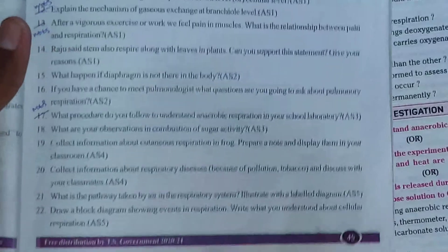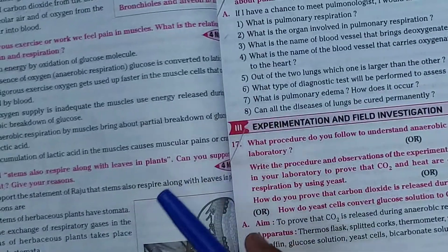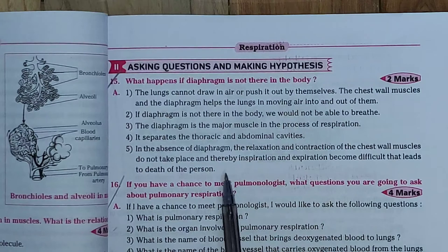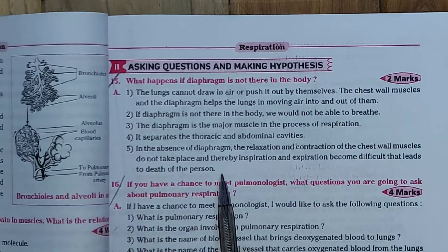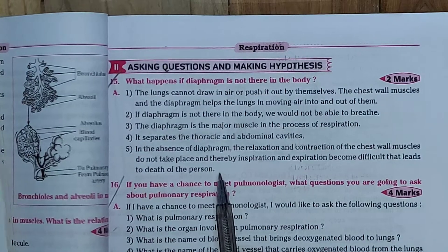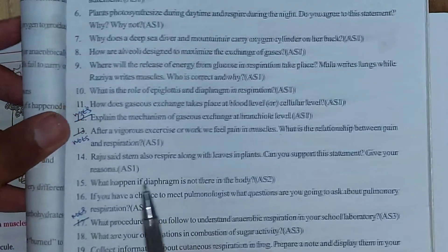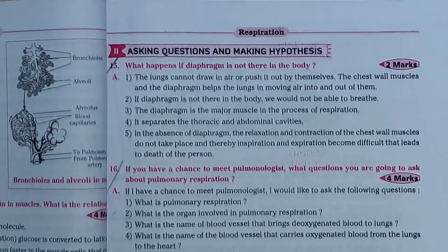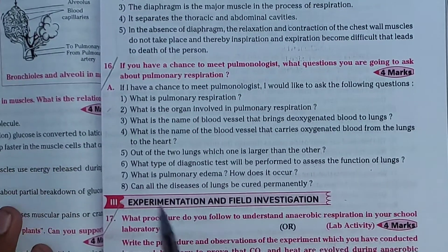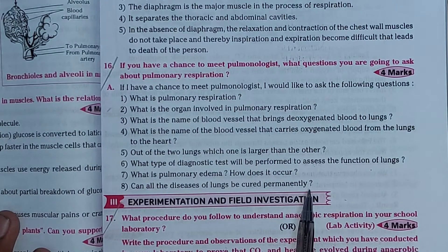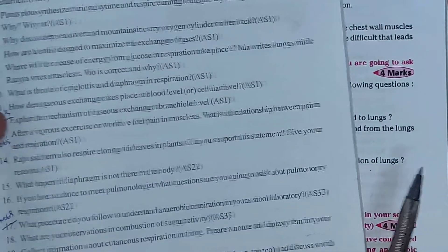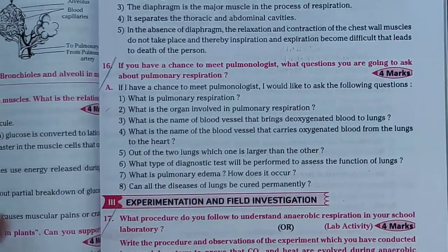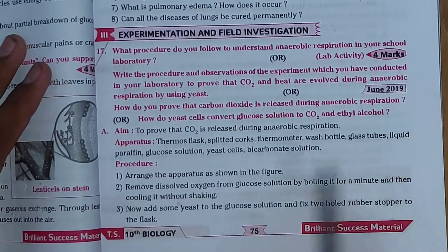Let's move to the 15th question. You can see the 15th question in the test book and the 15th question answer in Question Bank — the answer has a total of five points. Let's move to the 16th question. You can see the 16th question and the 16th question answer. Let's move to the 17th question in the test book.